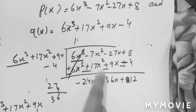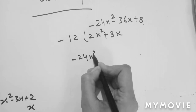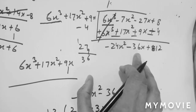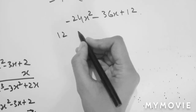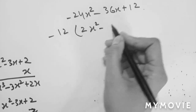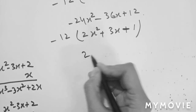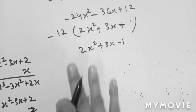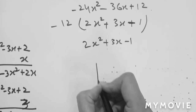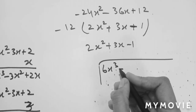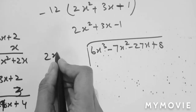We will write it here: minus 24x² - 36x + 12. We take 12 as a common factor: 12 divides into 24 giving 2x², 12 divides into 36 giving 3x, and 12 divides into 12 giving 1. So the factored result is 2x² + 3x - 1. Now we do the next step: we write 6x³ - 7x² - 27x + 8 on the inner side and 2x² + 3x - 1 on the outer side.